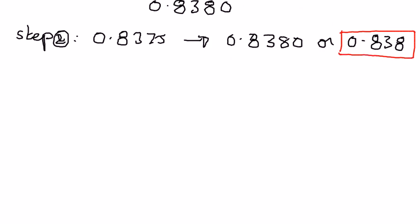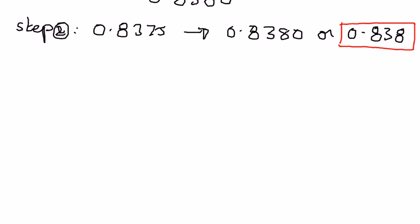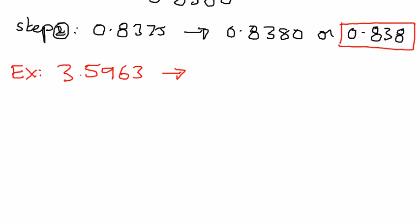Let us look at another example — how to round decimal numbers using the place value. In this example, let us say we want to round the number 3.5963 to the nearest hundredth place. We want to round it to the nearest hundredth place. And what is the hundredth place? It is 1 over 100.